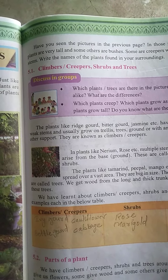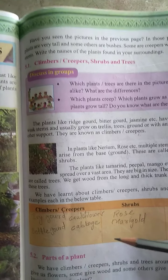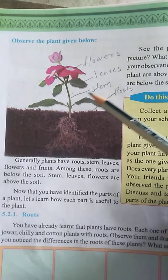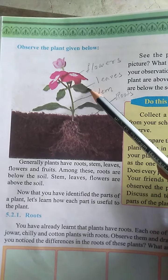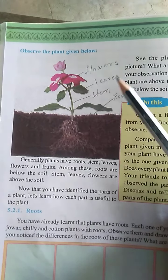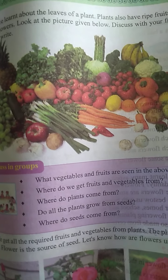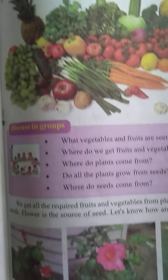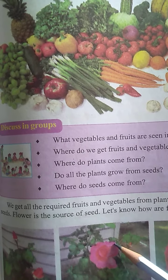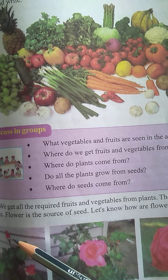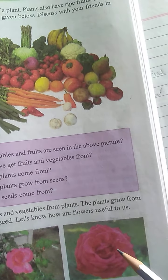And again we saw the different parts of a plant. What are the parts of a plant? The different parts of a plant are roots, stem, leaves, flowers and fruits. Next, we saw some vegetables and fruits also. Before a flower blossoms, what is there? This is called the bud. Then after a few days it becomes a flower.